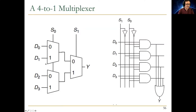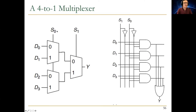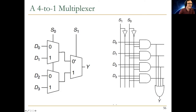The four-to-one mux module has four data inputs and a two-bit select. At the first level, two two-to-one multiplexers separately select between D0 and D1 (based on select bit S0) and between D2 and D3 (based on S0). Then a second-level multiplexer selects between the two first-level outputs based on S1. You can verify: if S0 is zero and S1 is zero, the output is D0.